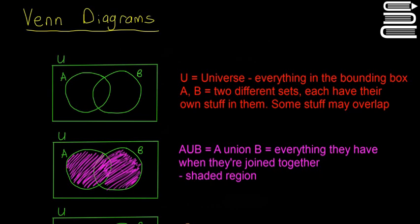Venn diagrams generally have a box and a few circles drawn in. In this case U is the universe, which is everything in the bounding box. A and B are the two circles labeled. They're two different sets, so each set has its own certain amount of stuff in them and some of the stuff may overlap.